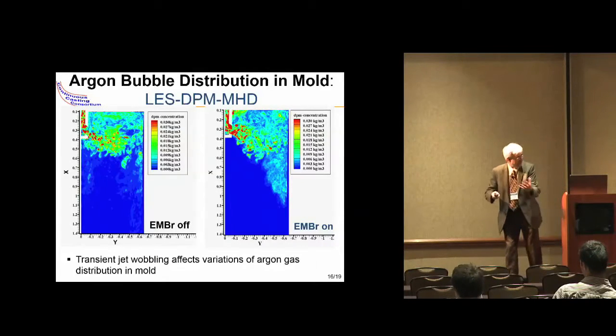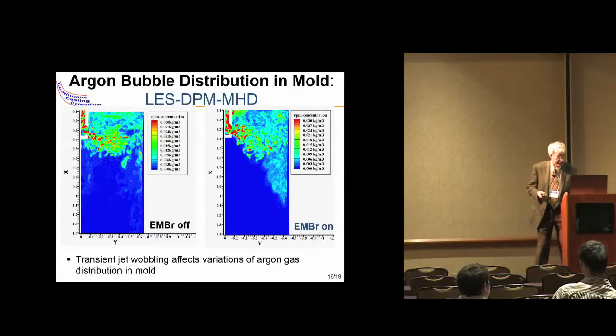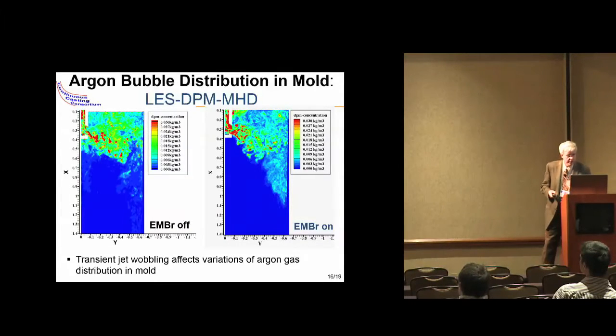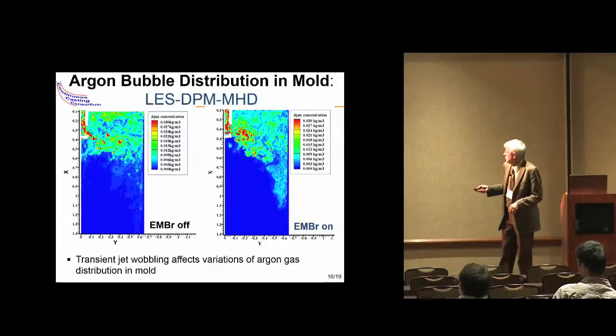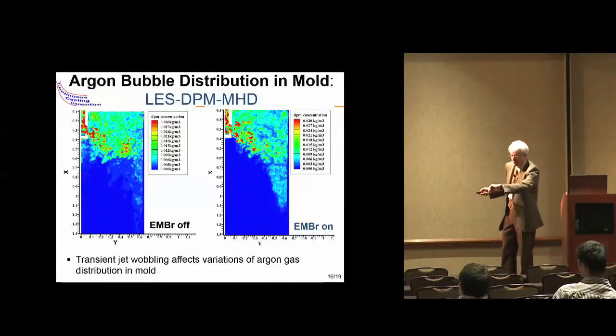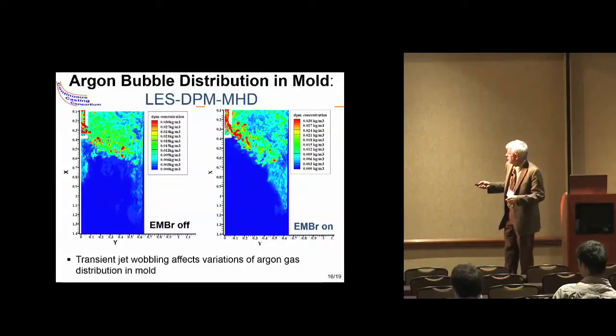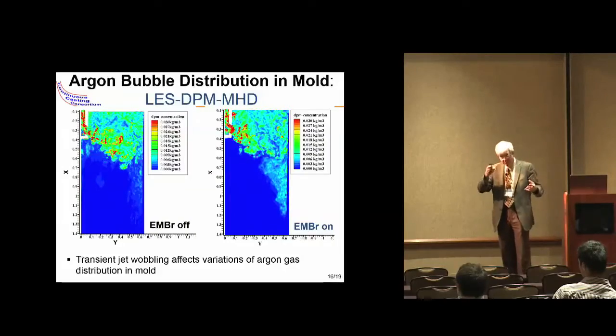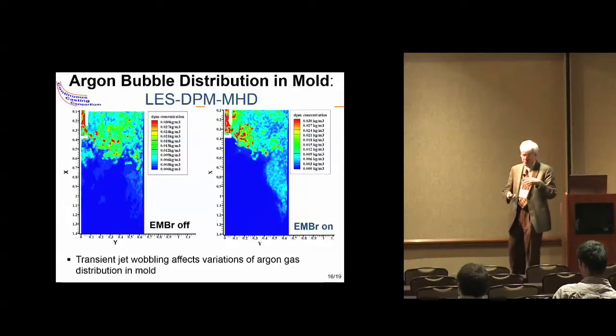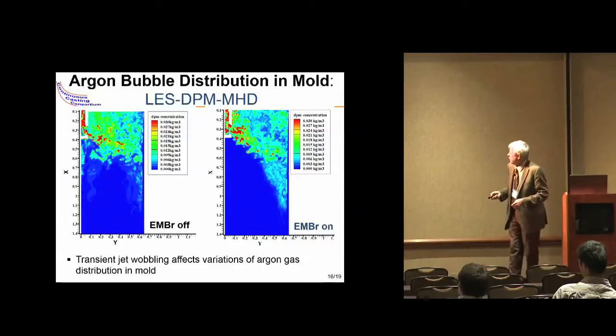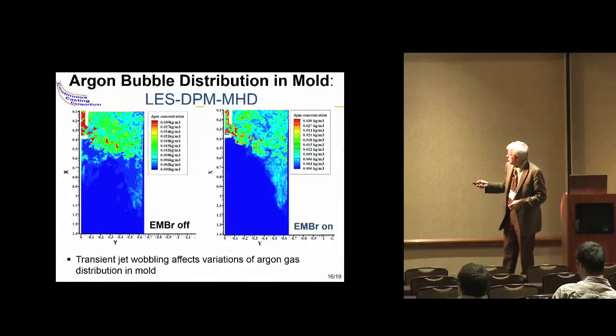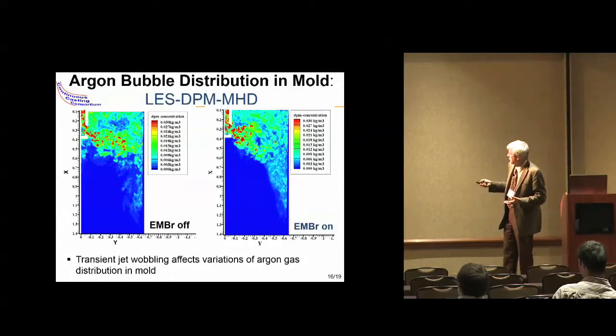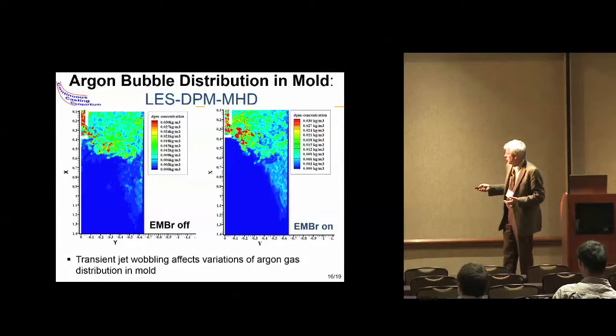Now we can add the next step: particles. Here's our argon gas—I've also got the effect of applying electromagnetic forces. Here's our gas coming in. We're modeling actually every single argon bubble, the most accurate way using this DPM model. Most of the gas exits the top and goes through the slag layer with no problem. Some of the gas escapes down into the lower part of the caster where it can cause trouble.